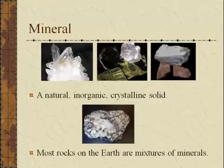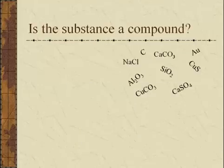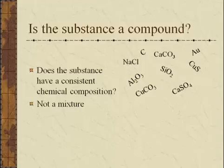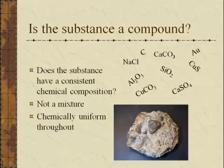How do you identify a mineral, and how do we know what a mineral is? We start by asking four rather basic questions. The first question is: is the substance a compound? As you can see from several mineral compounds listed here, mineral compounds have a consistent chemical composition. Throughout the whole mineral, they will have the same groupings of atoms and molecules. It's not a mixture, and it's chemically uniform throughout.